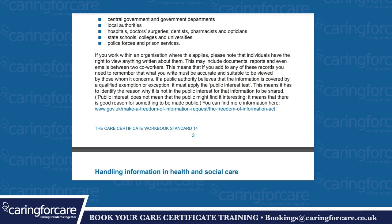If you work within an organisation where this applies, please note that individuals have the right to view anything written about them, including documents, reports and even emails between two co-workers. This means if you add any of these records, you must write accurately and in a way suitable to be reviewed by those whom it concerns. If a public authority believes information is covered by an exemption, it can apply the public interest test — meaning it must identify the reason why disclosure is not in the public interest. The public interest does not mean the public might find it interesting; it means there is good reason something is made public.